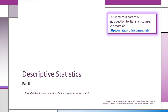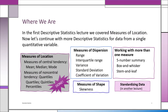Here we continue our lecture on descriptive statistics. This is just to remind you of what you already saw in the first part of the descriptive statistics lecture. We are looking at measures of location — we did that already. Now we continue and look at measures of dispersion, measures of shape, and different ways to combine measures together.